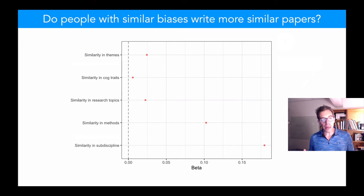All of these are also predictors in patterns of citations. So, not only are they likely to write more similar papers in terms of abstract similarity, they're more likely to cite all the same people.